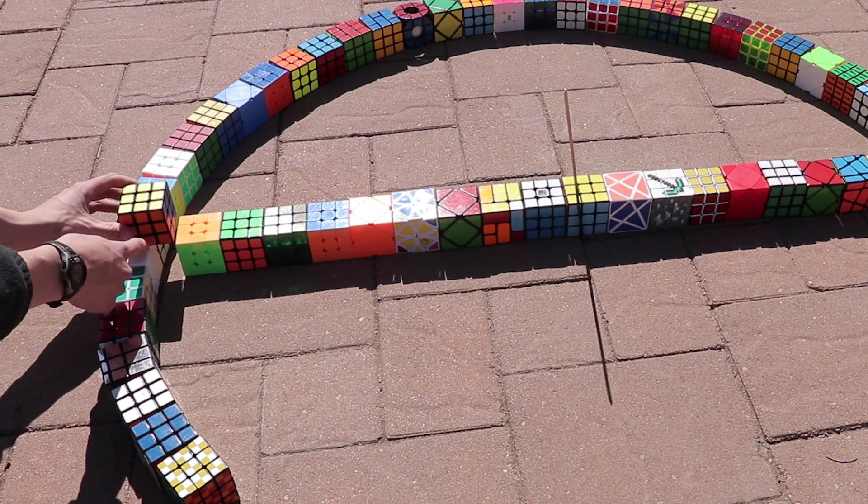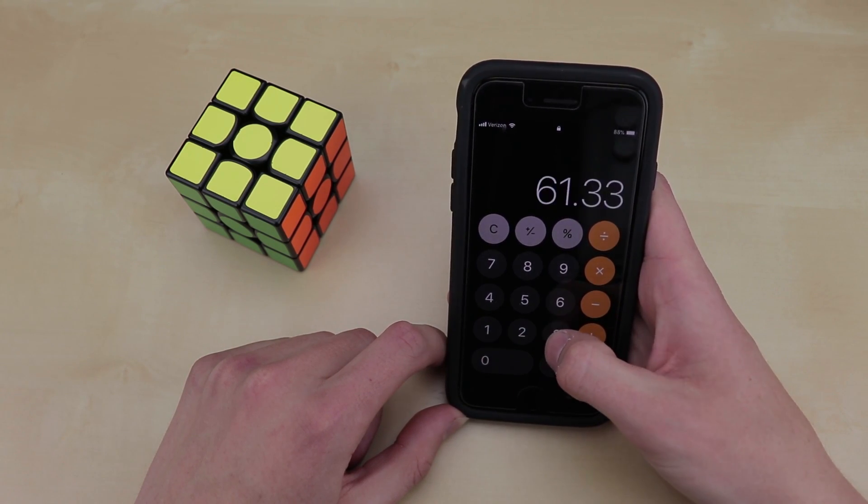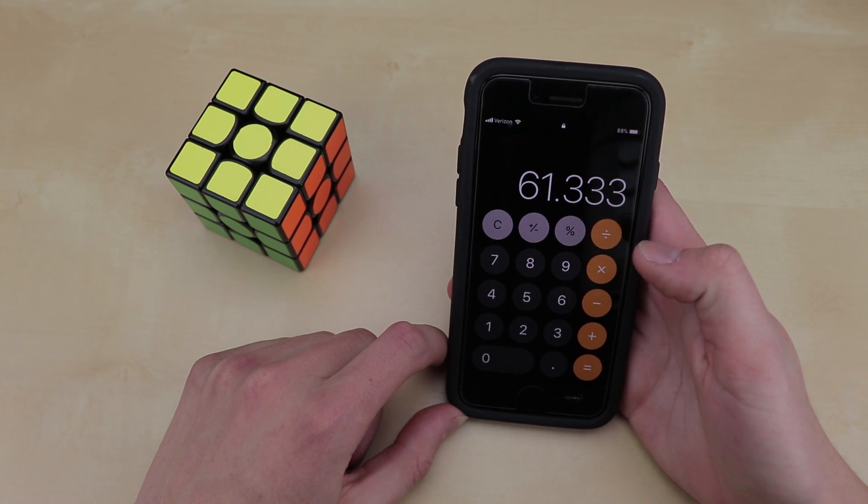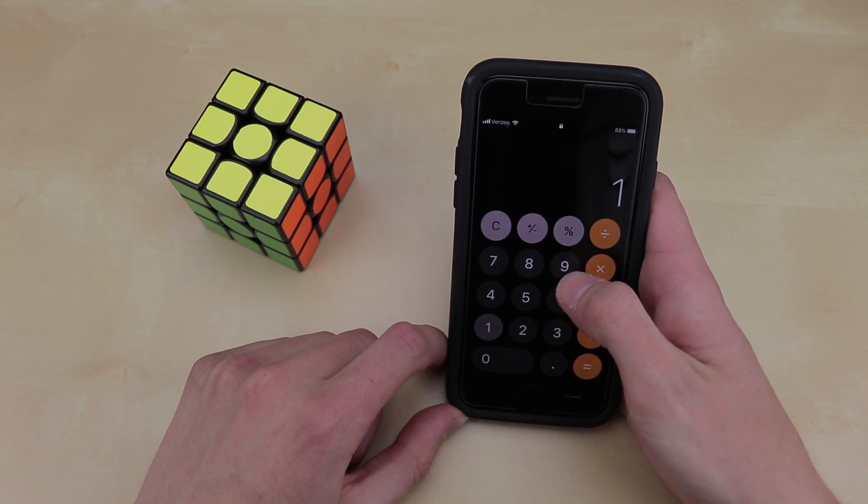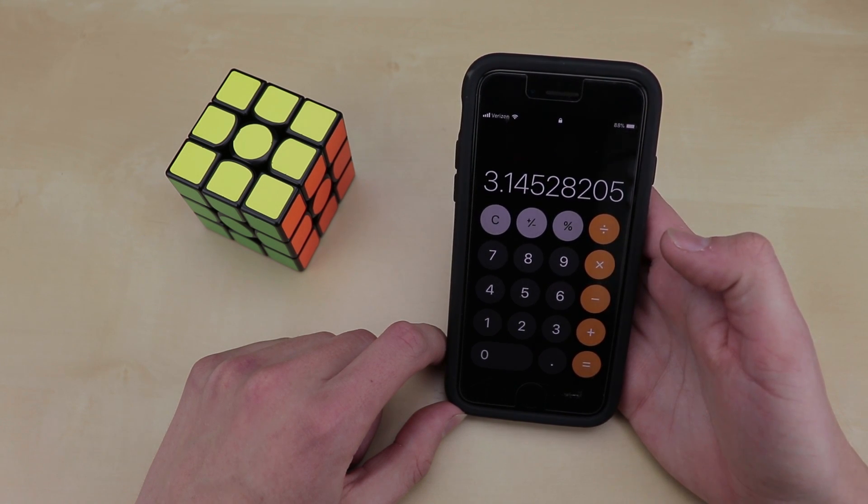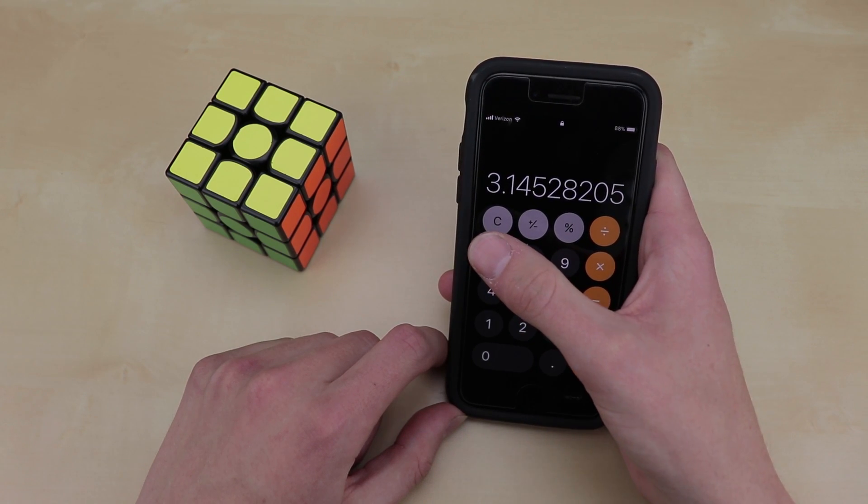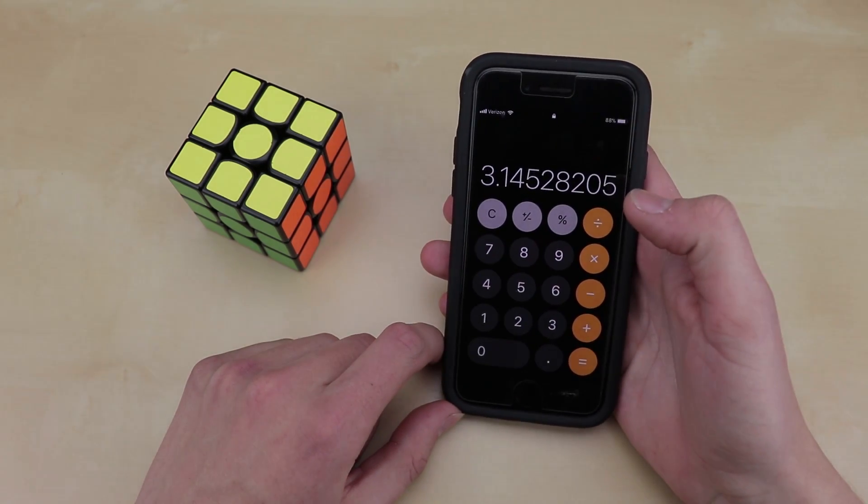So it was 19.5 across the diameter. So then if we go ahead and work this out with a calculator, we had 61 and a third cubes around the outside of the circle. Divide that by the diameter of 19.5 cubes. And we get 3.145. So that's a pretty good approximation. It's not quite on that fourth digit. But it is pretty good. We got the 3.14, which is pretty much all we need for Pi Day.